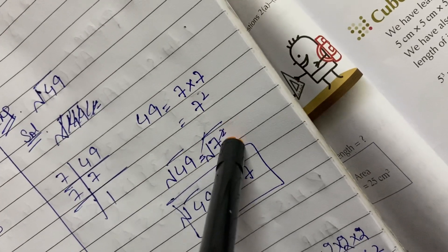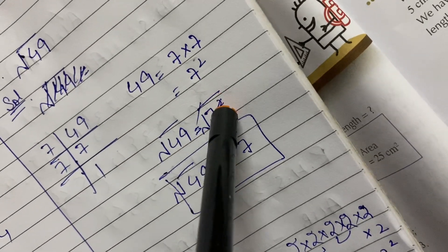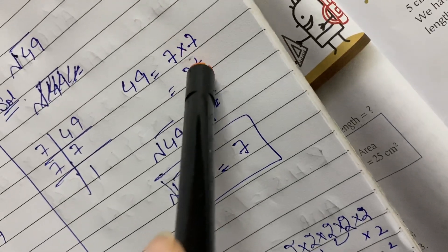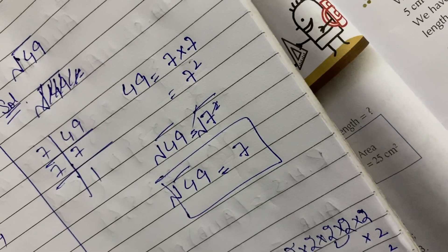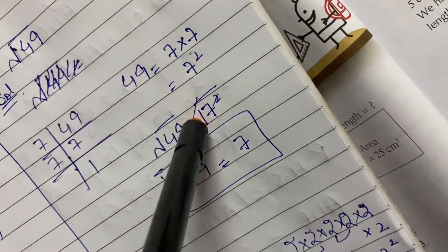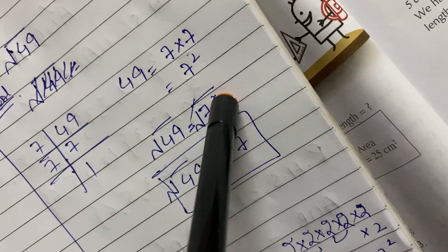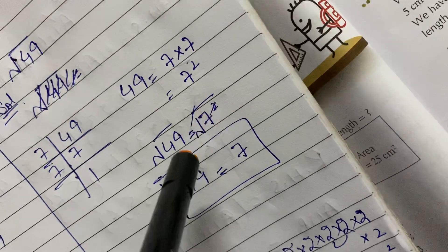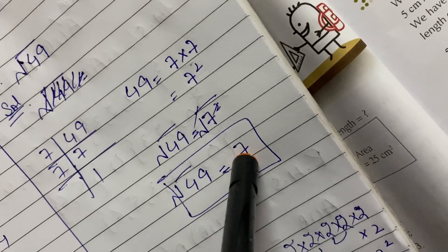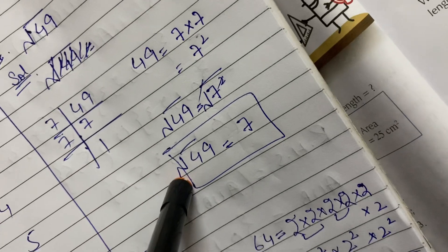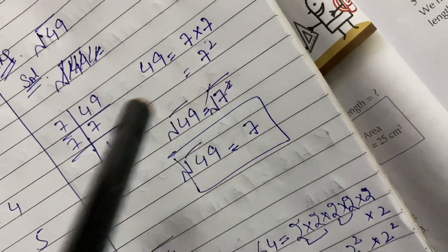Remember, the index here is the square — it can be a cube, four, five, and so on. This symbol is the square root. When we apply the square root to 7², the square and the square root cancel each other out, leaving us with 7. So the square root of 49 is 7.